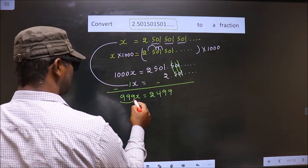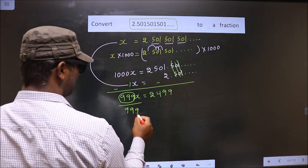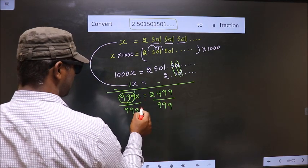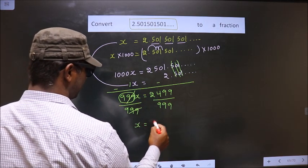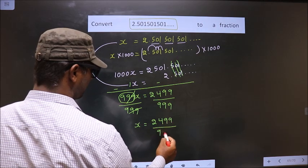Now I should remove 999 from here. For that, you divide by 999 on both sides. Now this cancels out. We get x equals 2499 by 999.